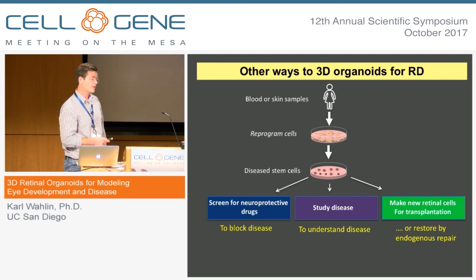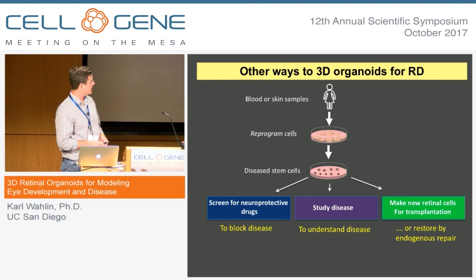There's a lot of things we can do with organoids to model retinal degenerations and tackle this problem. For example, we can screen for neuroprotective drugs to block disease before it becomes a real problem. We can study the disease, find targets to go after, and make new retinal cells for transplantation.